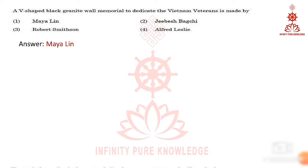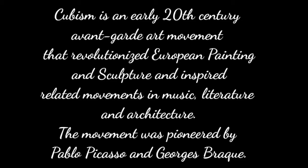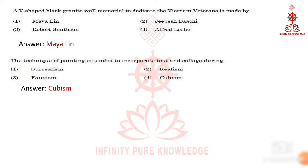Question 14: the depicting of painting extended to incorporate text and collage during Cubism. Cubism is an early 20th century avant-garde art movement that revolutionized European painting and sculpture and inspired related movements in music, literature, and architecture. The movement was pioneered by Pablo Picasso and Georges Braque.